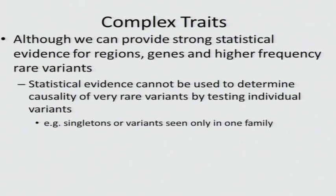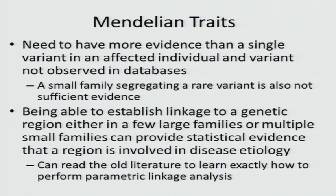Although we can have statistical evidence for regions, genes, or higher-frequency rare variants, we still have the problem that we cannot have statistical evidence to determine causality of very rare variants by testing individual variants, because you just won't have the power to detect association.